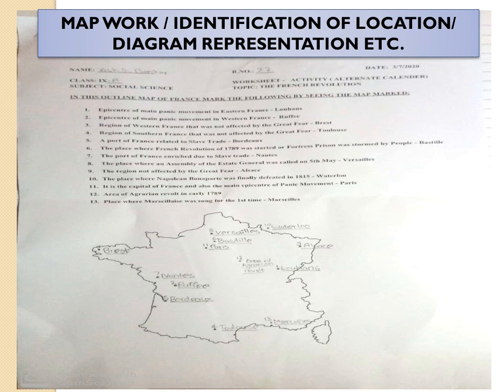Map work, identification of locations, diagrams, and representation are done regularly. But rather than just marking on the map, we can ask students to color it — for example, color the regions of the independence struggle. We can also integrate subjects, because in class 10 English there are lessons on Assam, Coorg, and Goa which can be intermingled with map work in different colors. Instead of just putting a dot or marking, we can also add the specialities of that particular place with a diagram on the map.